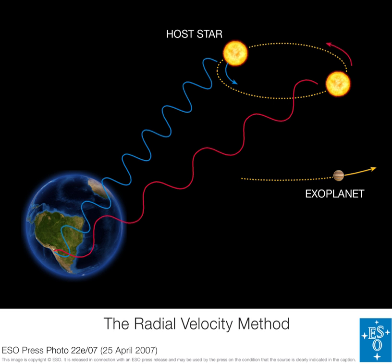Light from an object with a substantial relative radial velocity at emission will be subject to the Doppler effect, so the frequency of the light decreases for objects that were receding and increases for objects that were approaching. The radial velocity of a star or other luminous distant objects can be measured accurately by taking a high-resolution spectrum and comparing the measured wavelengths of known spectral lines to wavelengths from laboratory measurements.